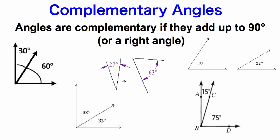Notice especially the two angles in the middle. They're not right next to each other, but they still add up to 90 degrees, which means they are complementary. You need to write down angles are complementary if they add up to 90 degrees.